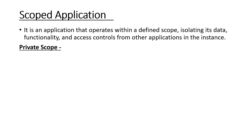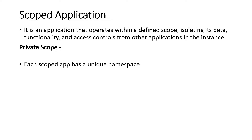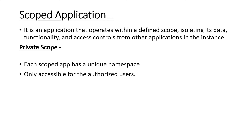We have two kinds of scope: private scope and global scope. For private scope, each scope has a unique namespace. When you create a custom application, each application will have a different namespace — you'll see this in the demo.